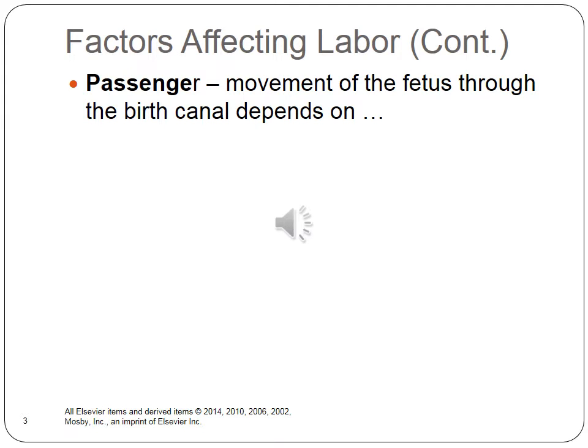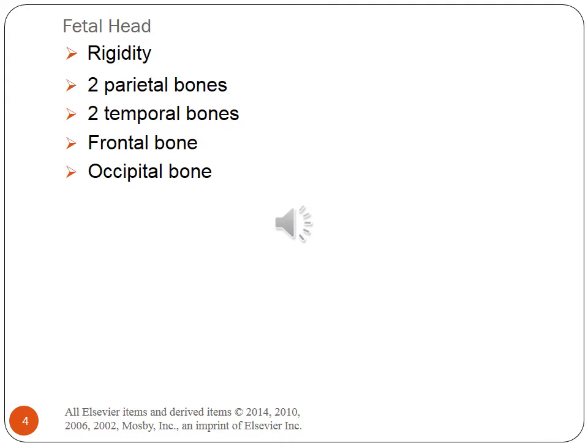Let's discuss passenger — that's the movement of the fetus through the birth canal. This depends on the size of the fetal head, fetal presentation, fetal lie, fetal attitude, and fetal position. When discussing the fetal head, you want to look at its rigidity. There are two parietal bones, two temporal bones, the frontal bone, and the occipital bone. The bones are united by sutures and membrane-filled spaces called fontanelles, located where the sutures intersect. Palpation of the fontanelles and sutures during a vaginal exam reveals fetal presentation, position, and attitude. Sutures and fontanelles make the skull flexible. This information is in your textbook, page 342.